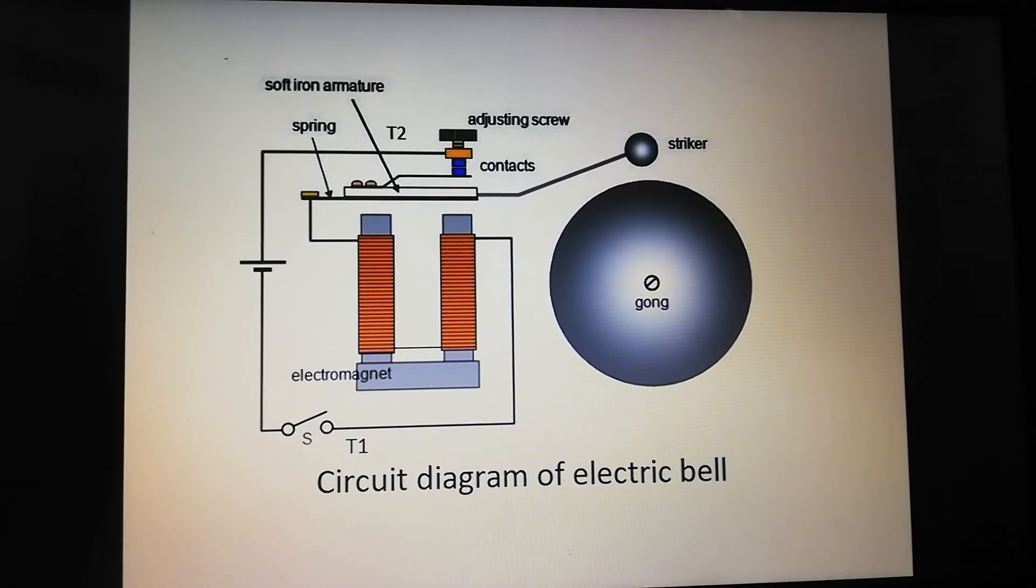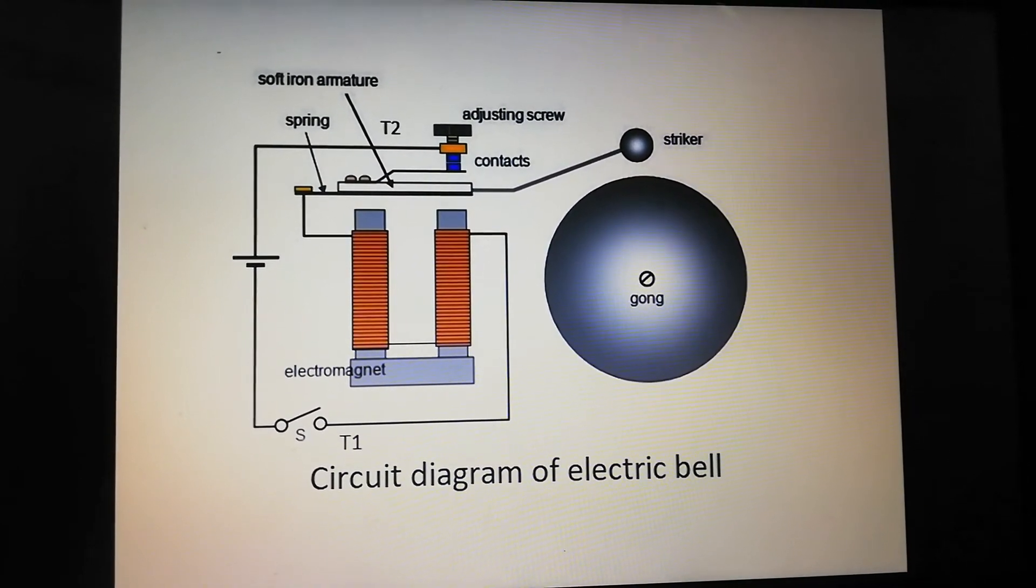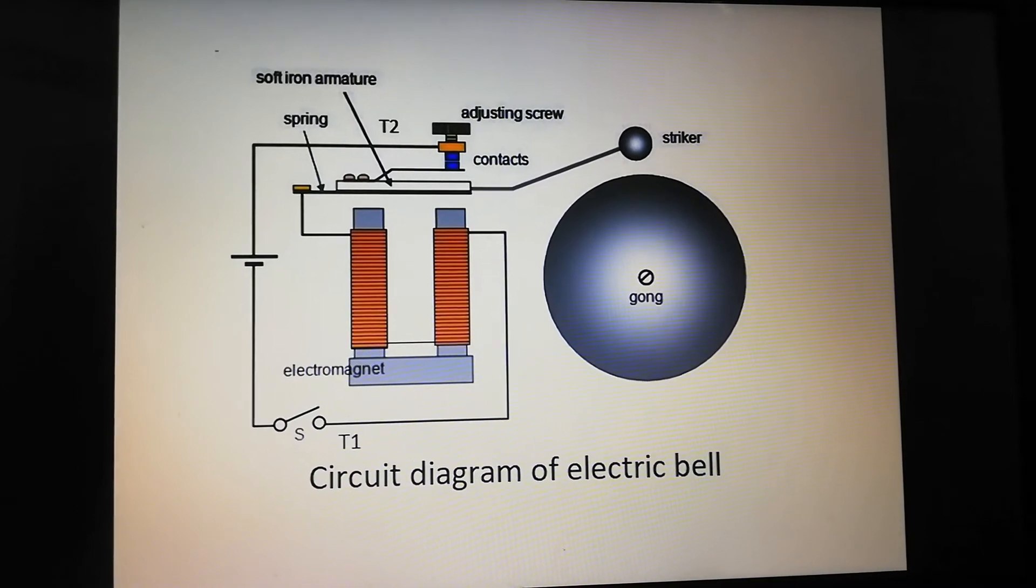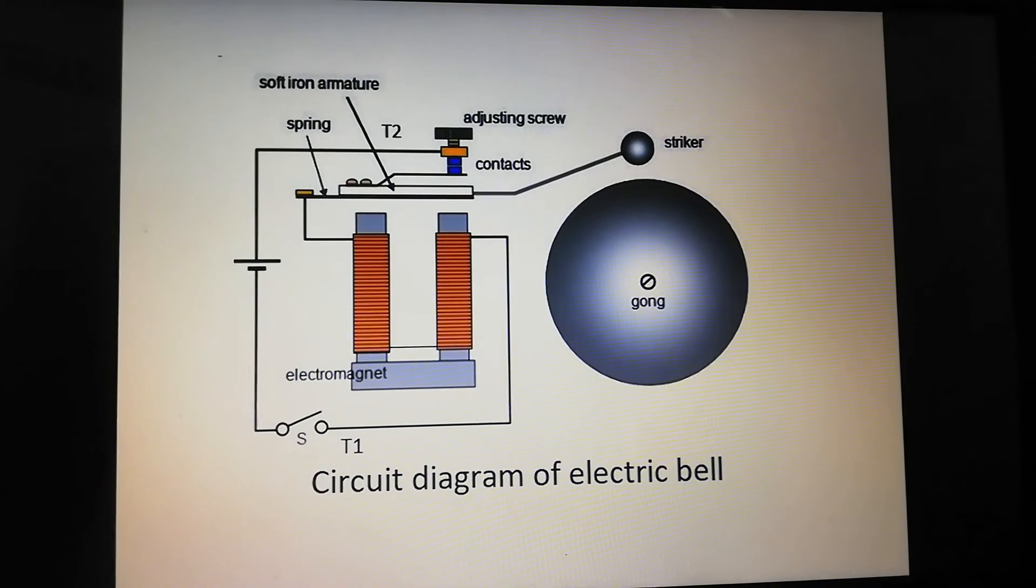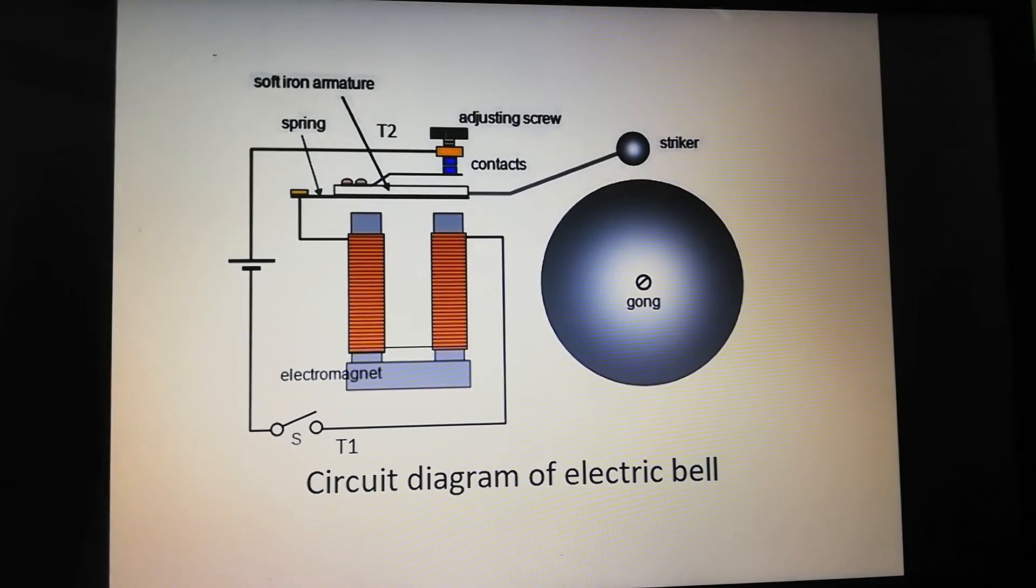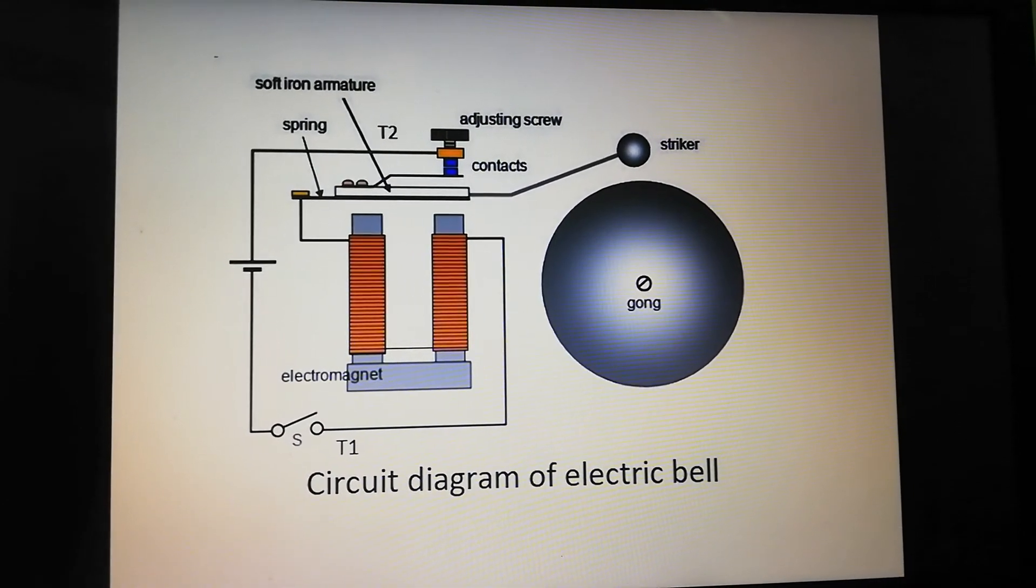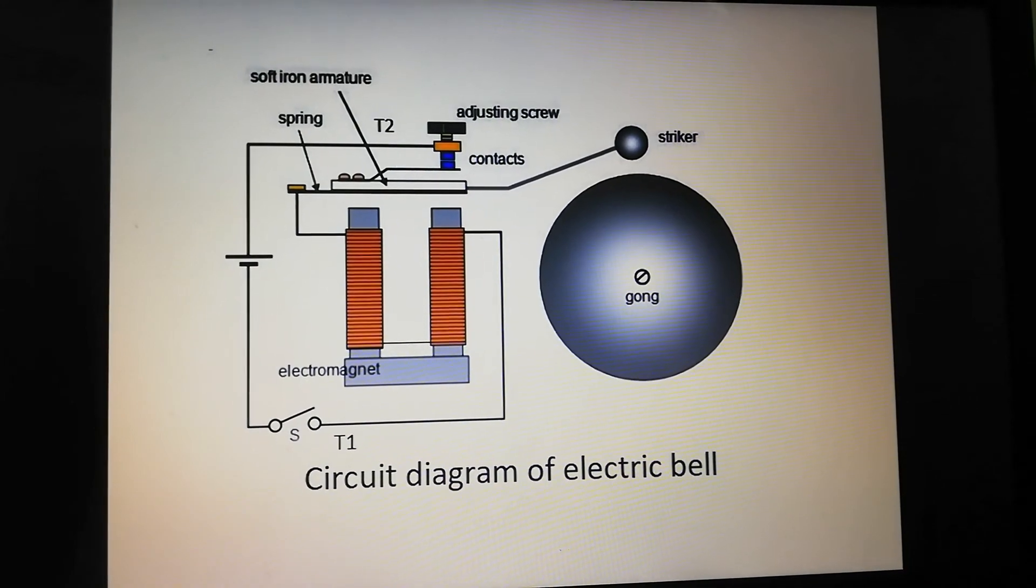The spring arm returns the striker to its original position. The contact is restored and current flows through the circuit, provided the main switch is still pressed. The process is repeated from the beginning.